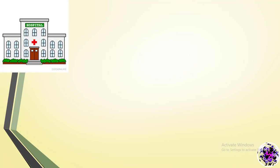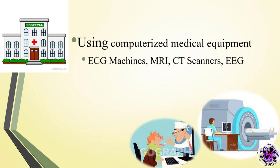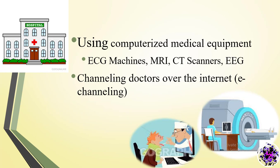In hospitals, we use computerized medical equipment, also known as computer embedded devices. Examples include ECG machines, MRI, CT scanners, and EEG. We can also channel doctors over the internet — this is called e-channeling, or electronic channeling.